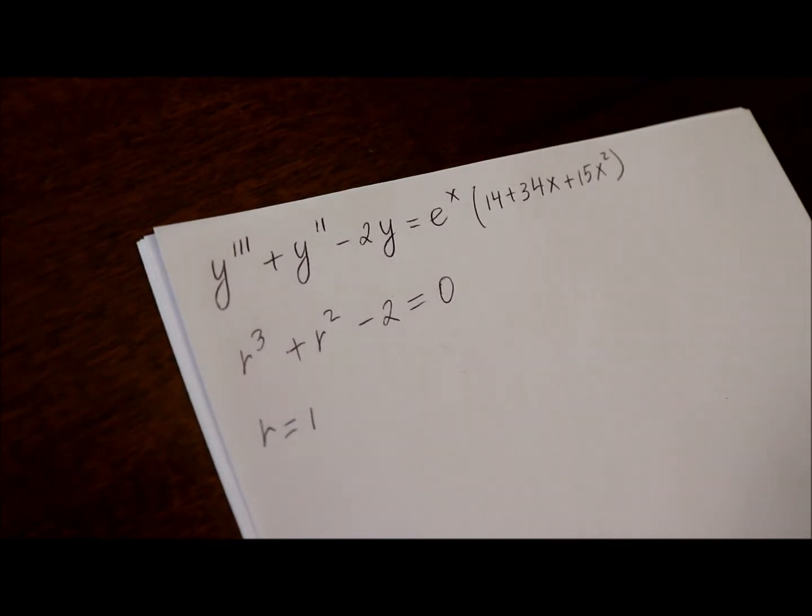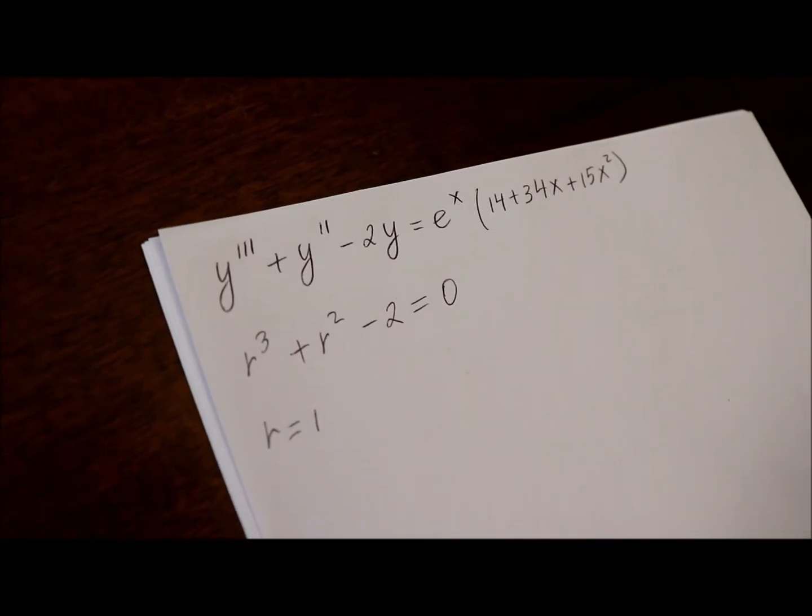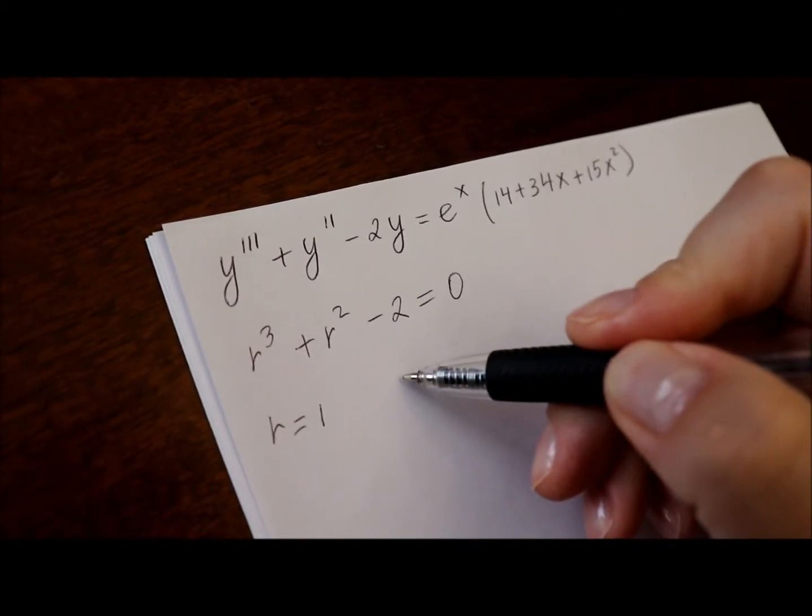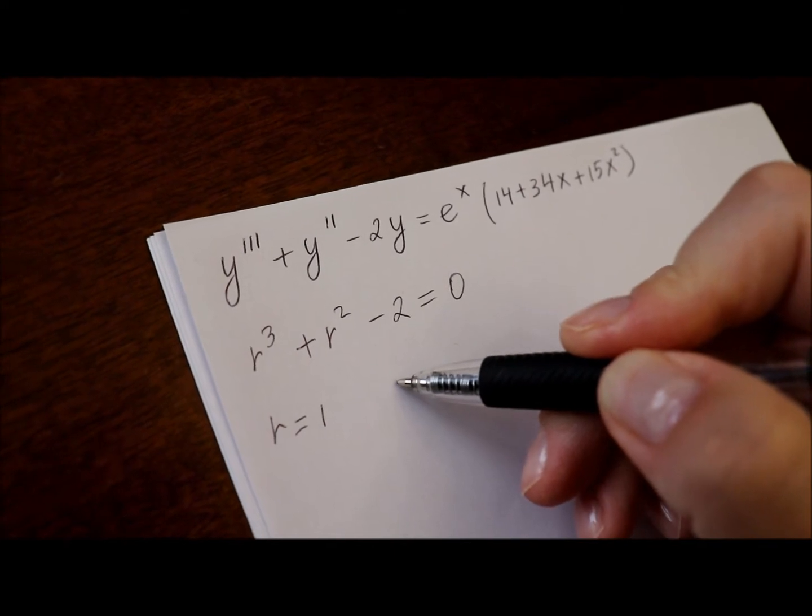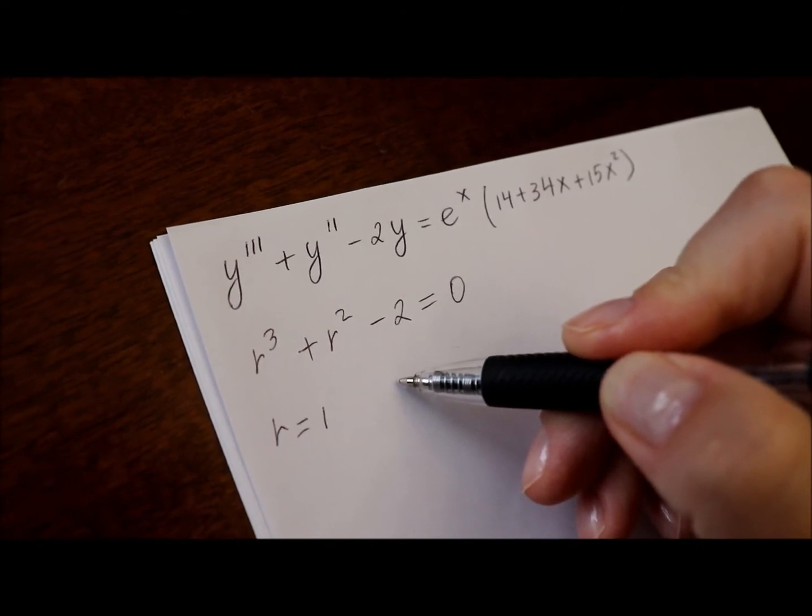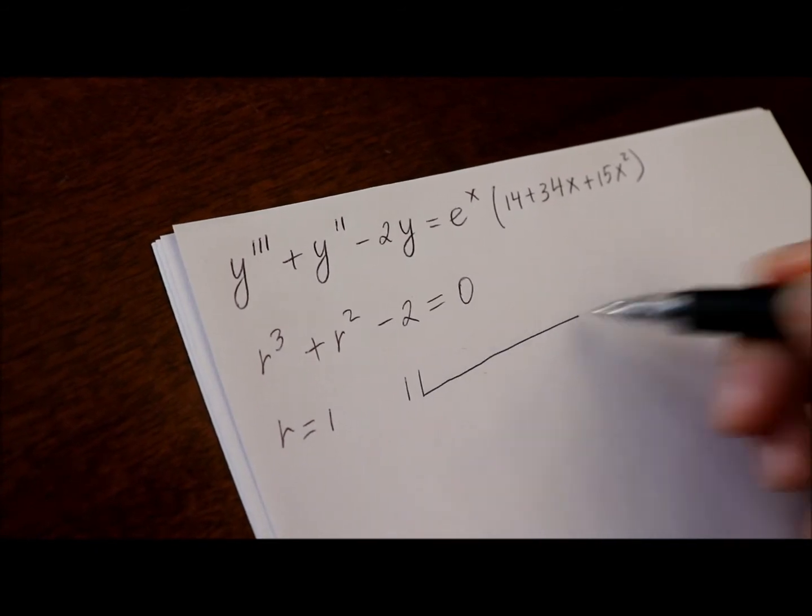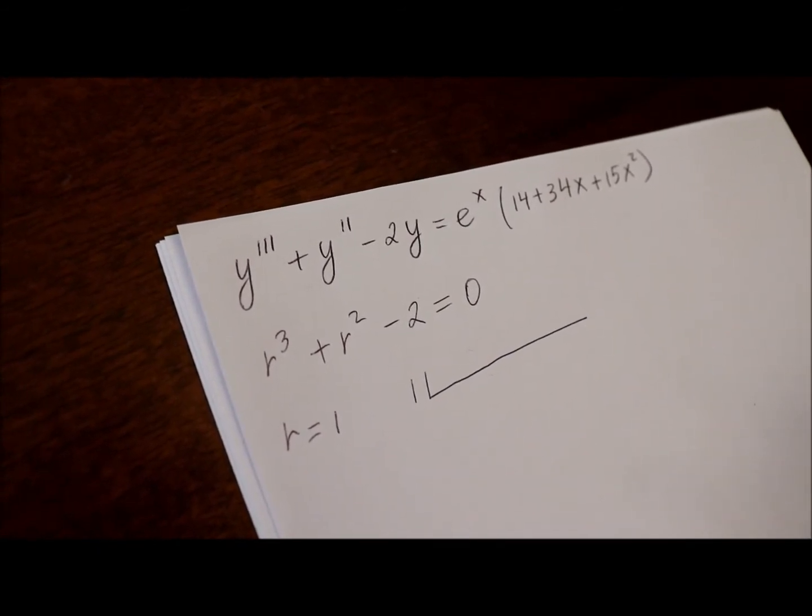Let me find the other solutions by dividing this polynomial by r minus 1 or by using the synthetic division. So the way we do synthetic division, we write the solution 1.